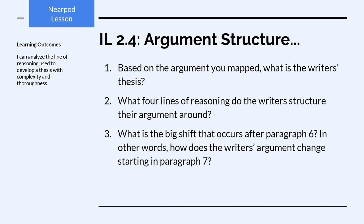Number three: what is the big shift that occurs after paragraph 6? We only analyzed paragraphs 1 through 6 because that is one complete argument. Paragraph 7 takes the text in a related new direction: 'The treatment of former felons in the electoral system cries out for reform. The cleanest and fairest approach would be simply to remove the prohibitions on felon voting.' So the shift is from arguing how disastrous felon voting laws have been in the past to arguing what ought to be done in the future to fix the problem.